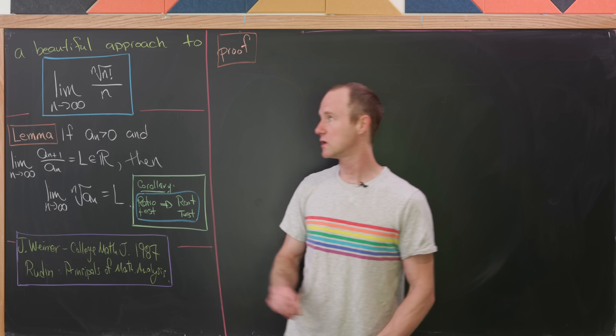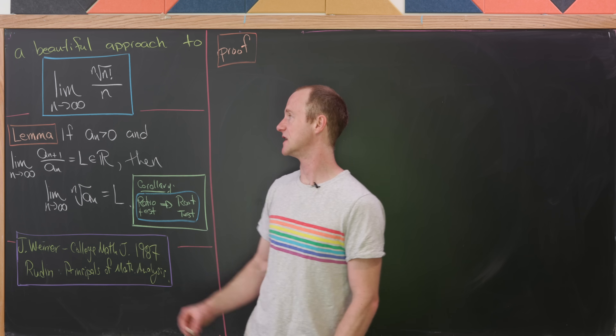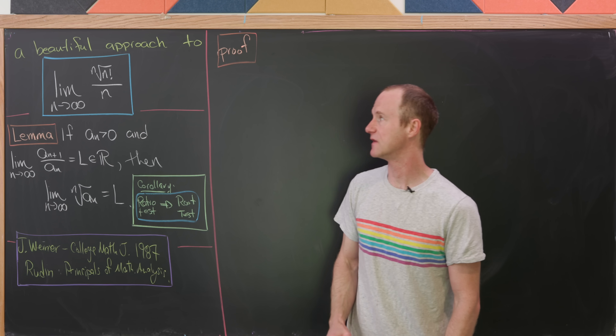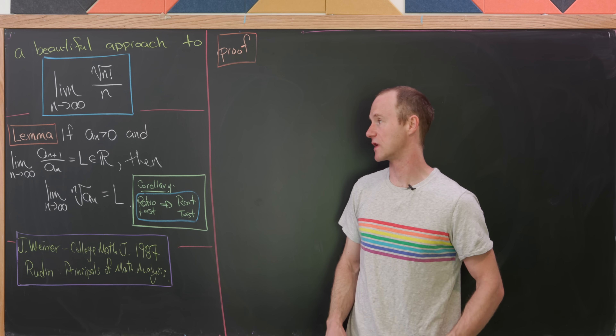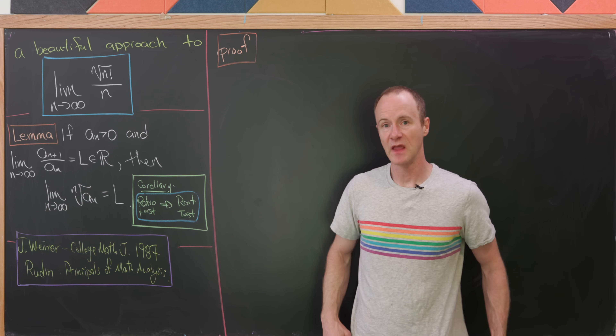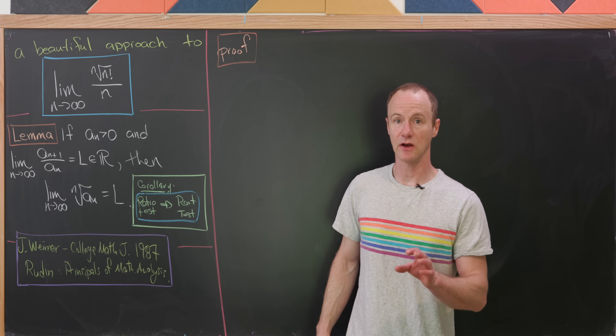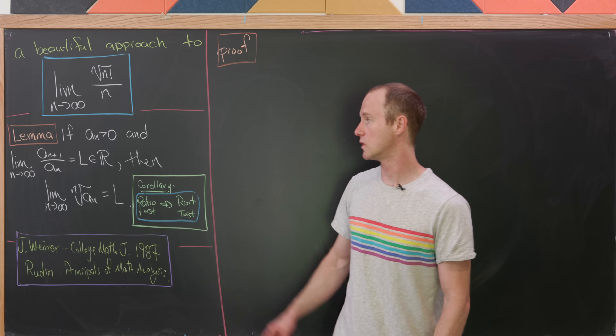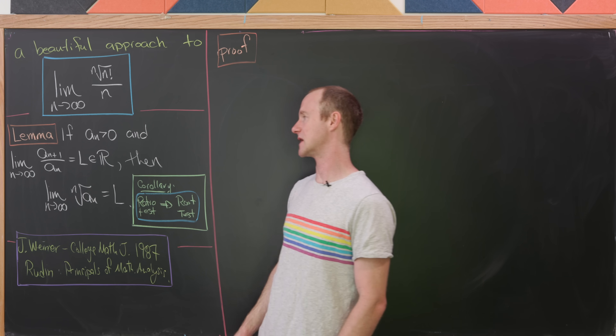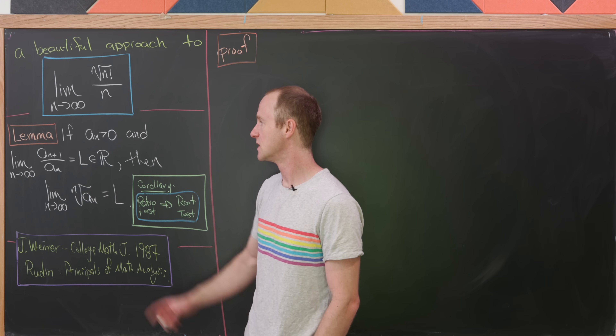Our goal is the limit as n goes to infinity of the nth root of n factorial over n. And in order to achieve this goal, we'll use the following lemma.